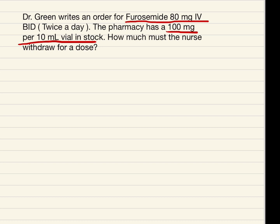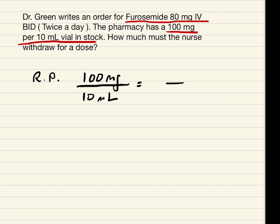Let's solve this as a ratio-proportion problem first. We'll set up the ratio: 100 milligrams over 10 ml is equal to 80 milligrams over x ml — that's what we want to find out. How many milliliters do we have to withdraw from the vial?